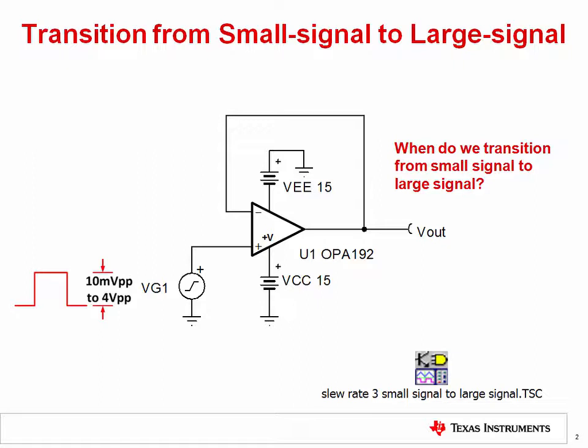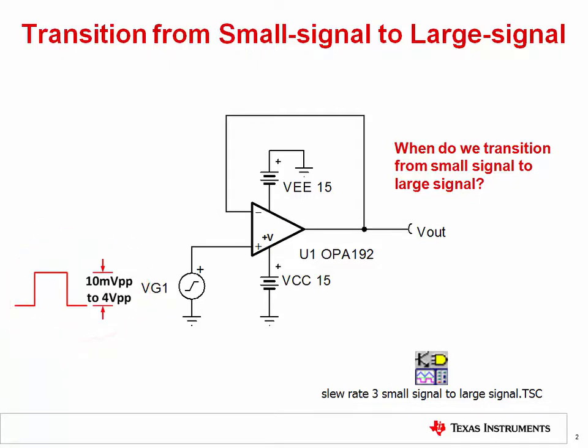Here we have a simple op-amp circuit configured as a non-inverting buffer. We'll apply a range of input steps from 10 millivolts peak-to-peak to 4 volts peak-to-peak and observe the output. A transient simulation done in TINA TI will allow us to observe whether the circuit shows small signal or large signal behavior.